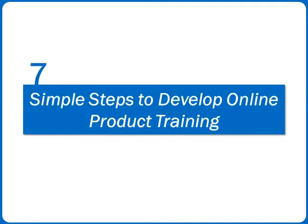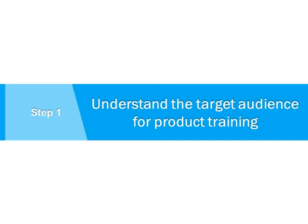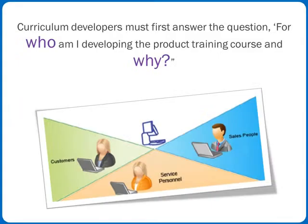7 Simple Steps to Develop Online Product Training. The first step is to understand the target audience for product training. In this step, curriculum developers must first answer the question: For whom am I developing the product training course and why, before collating the content for product training?